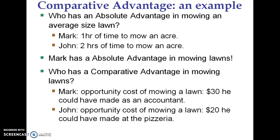Then, looking at John — John could have worked at the pizzeria for two hours and he could have made $20. So John's opportunity cost to mow a lawn — if he's mowing the lawn, he's not at the pizzeria — is $20.